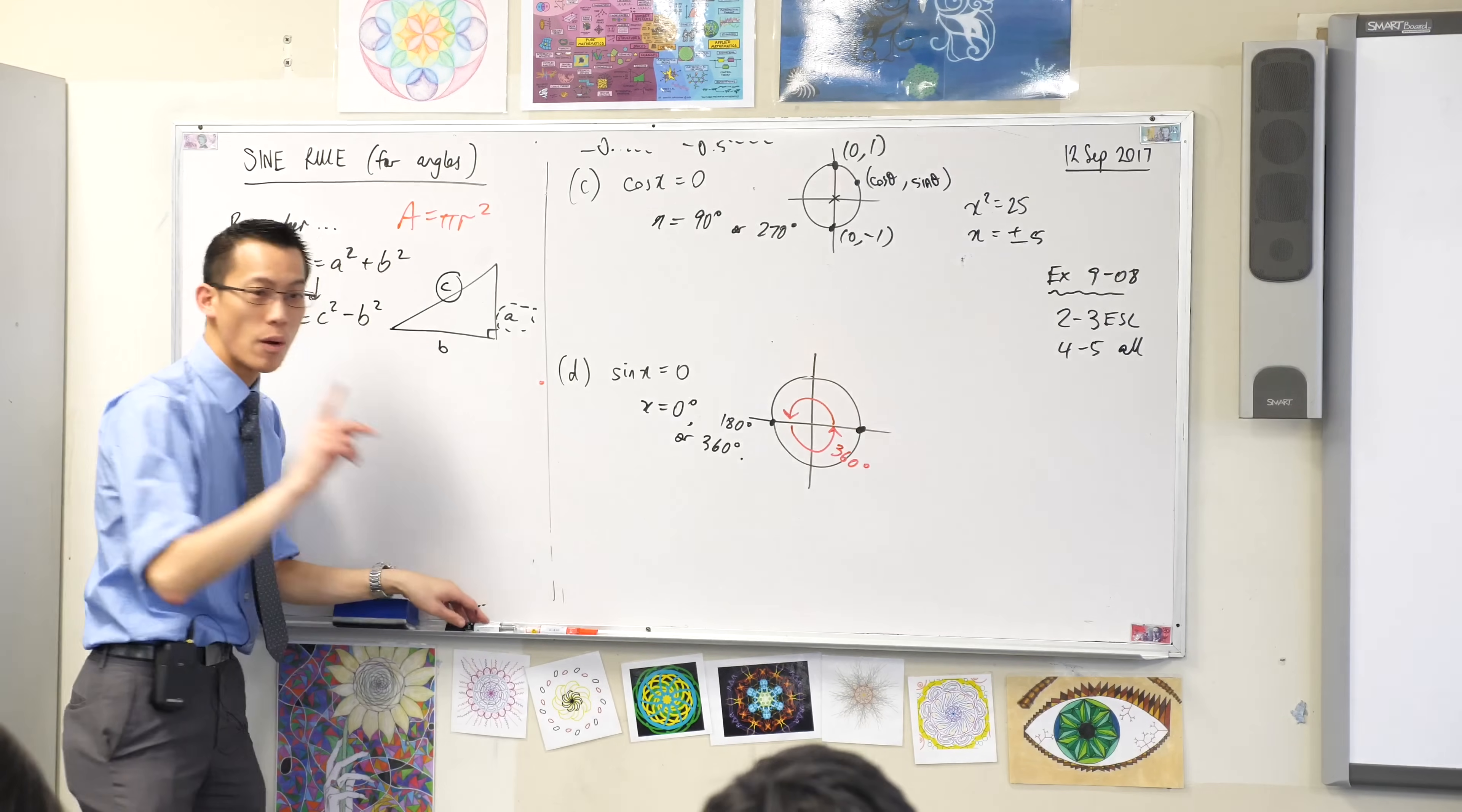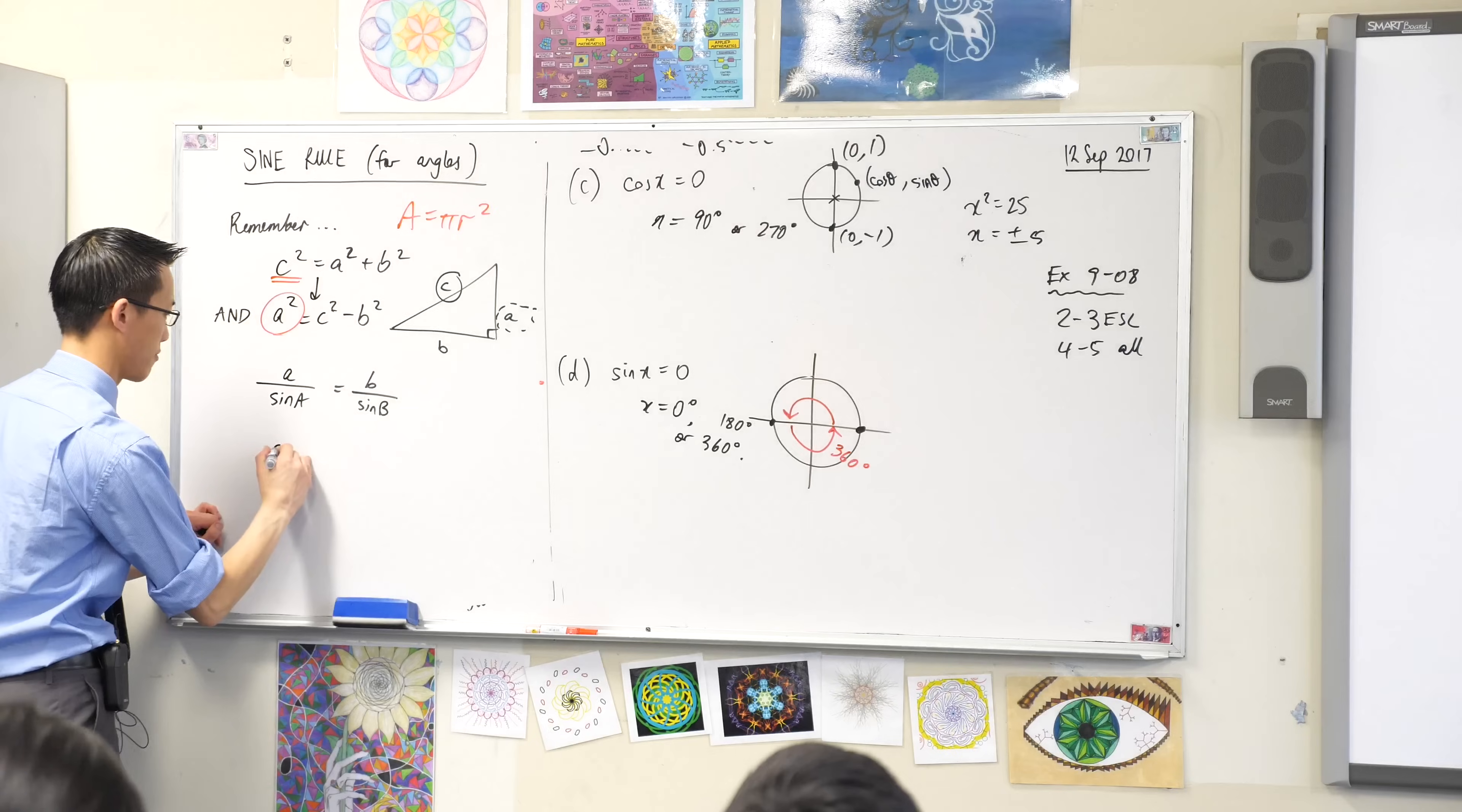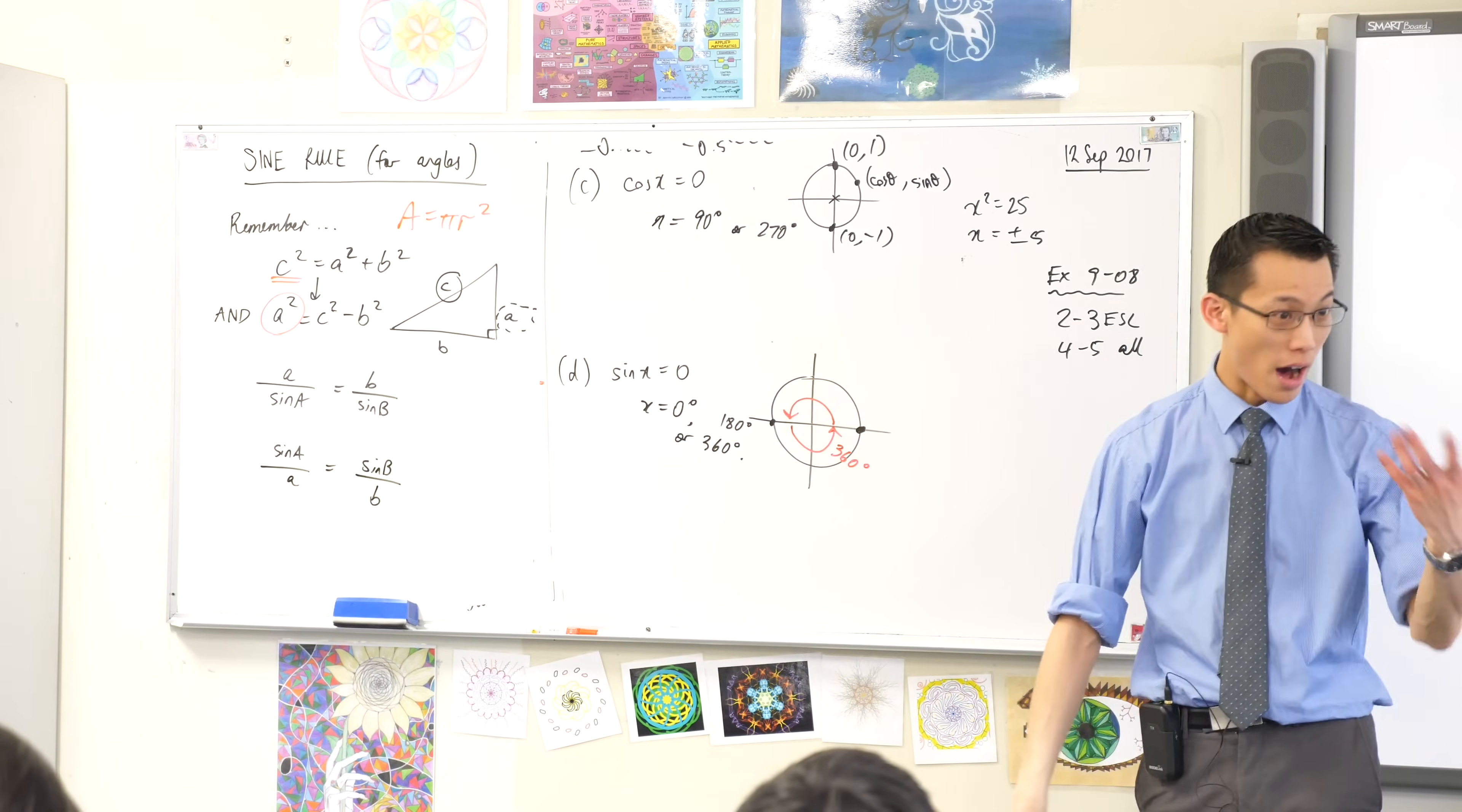Now yesterday, when we wrote this sine rule, I actually wrote it in two ways. Do you remember what they were? I wrote one like this, and then I wrote another one just like it, but upside down. Like so. Now just like up here, both of these guys are the sine rule. They're both the sine rule, but which one you use depends on what you're after, okay?